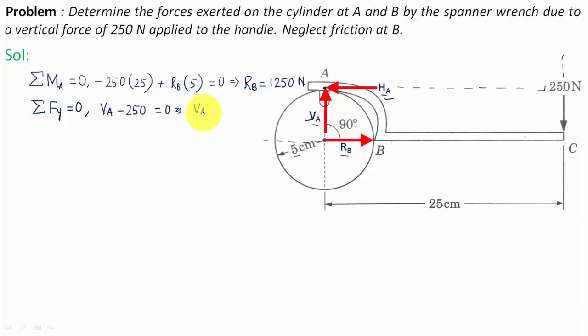Now we're going to calculate the value of HA. Since HA is in the horizontal direction, you're going to use the equation F of X equals zero. HA is towards the left hand side so it's negative, whereas RB is directed towards the right hand side so it's positive.